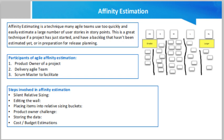Then items are placed into relative sizing buckets — groups labeled according to the estimation scale of choice. For example, buckets can be labeled as extra small, small, medium, large, extra large, or based on a nonlinear scale with story point values such as 1, 2, 3, 5, 8, and 30.